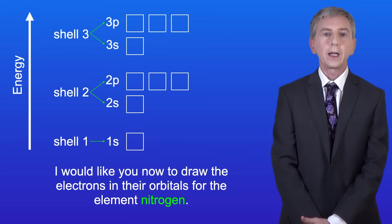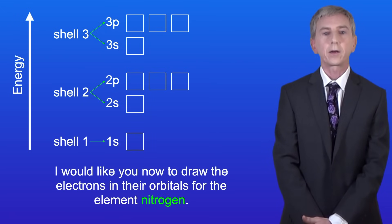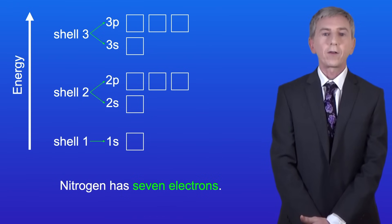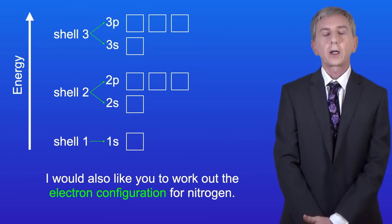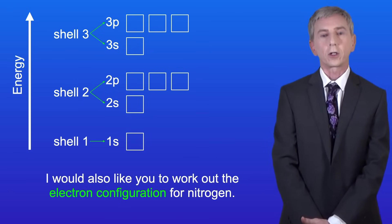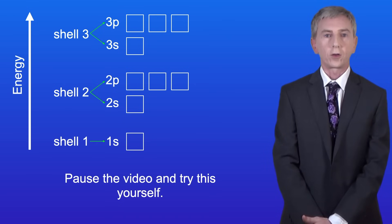Okay, I'd like you now to draw the electrons in their orbitals for the element nitrogen. Nitrogen has got seven electrons. I'd also like you to work out the electron configuration for nitrogen, so pause the video and try this yourself.